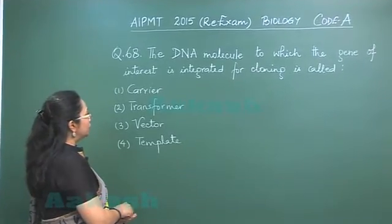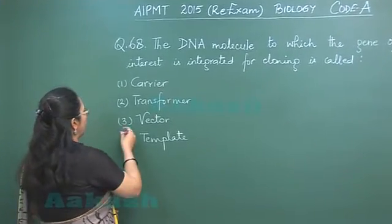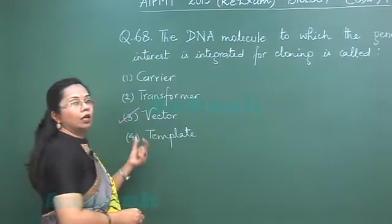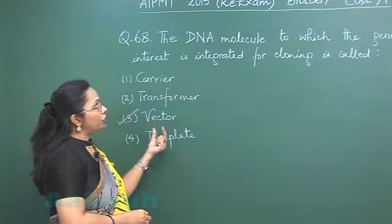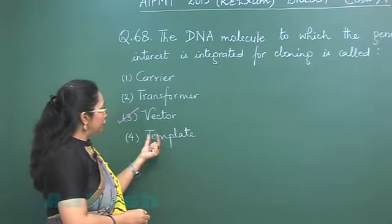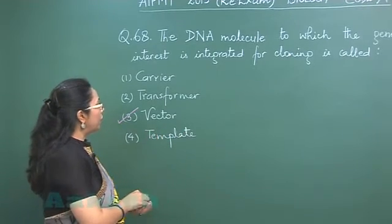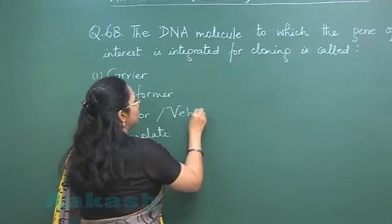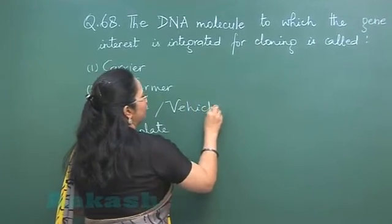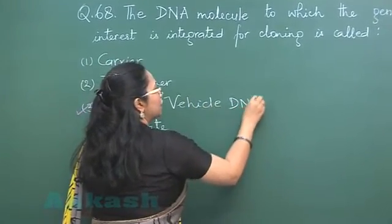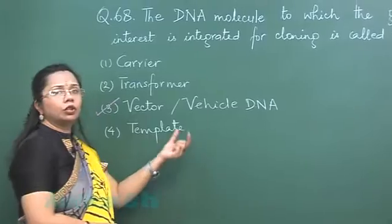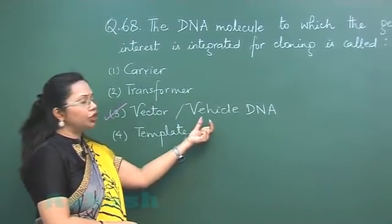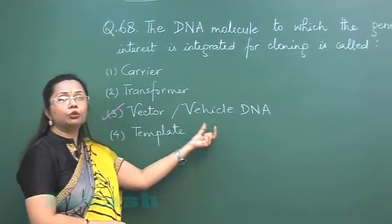The answer is vector. The vector DNA is a DNA to which we attach the gene of interest. That is why this vector DNA is also called vehicle DNA, because it is used to integrate or transport the gene of interest into the host cell.